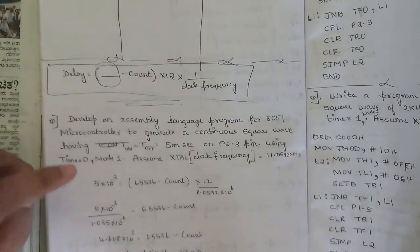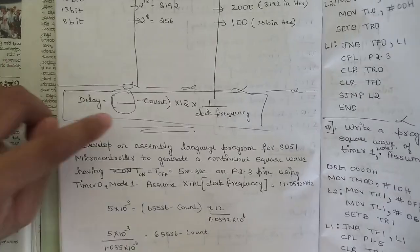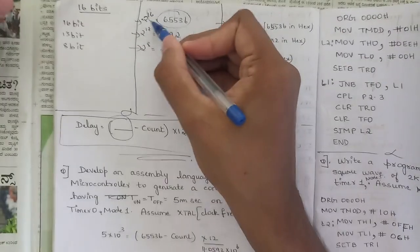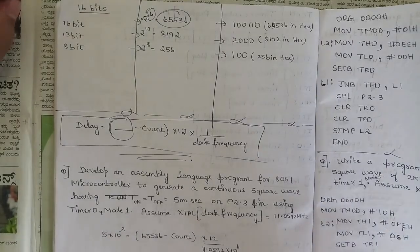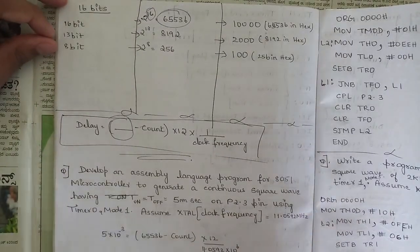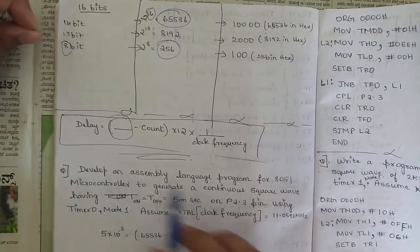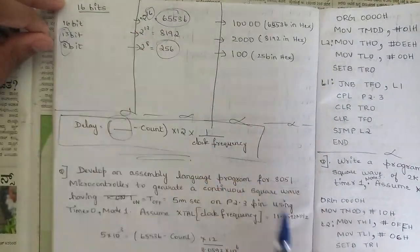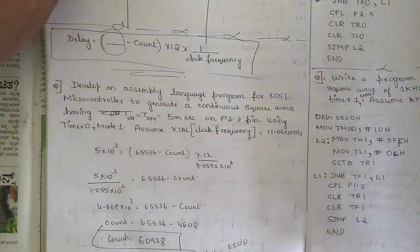The dash value varies for different modes. In mode 1, we write 65536 because mode 1 consists of 16 bits in the TMOD register. For mode 2 it is 8 bits, so the value is 256. When mode 0 is mentioned, we use the 13-bit timer value, that is 8192, in place of this dash in the formula.